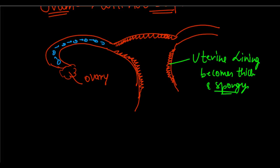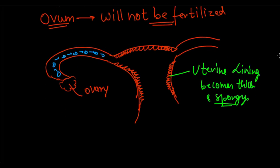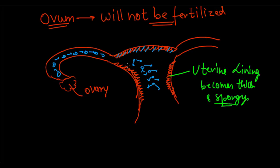But what if there is no sexual intercourse — there will be no fertilization, and then what will happen? If there is no fertilization and if the egg does not get fertilized, then this egg will start moving and start breaking apart. Also, this thick uterine lining is now no longer required, so this lining starts breaking.